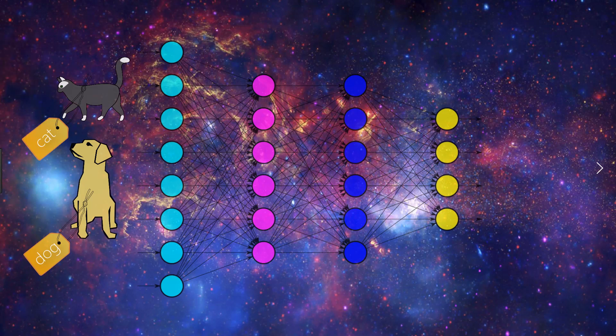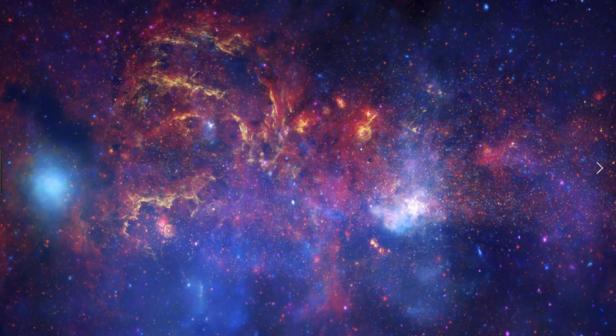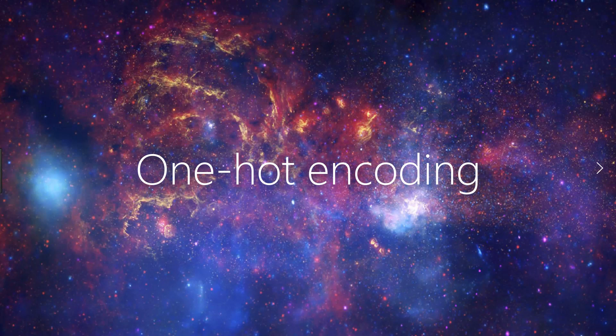Instead, most of the time, our labels become encoded so that they can take on the form of an integer or of a vector of integers. One type of encoding that is widely used for classifying categorical data is called one-hot encoding. One-hot encoding transforms our categorical labels into vectors of zeros and ones.